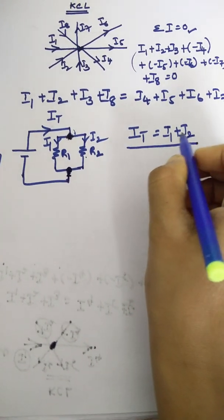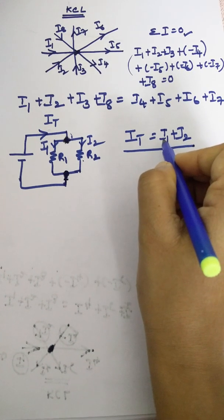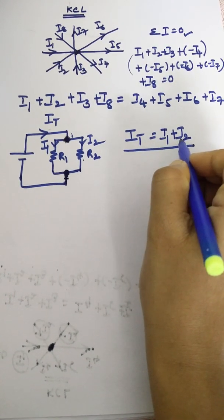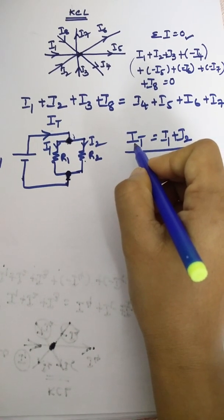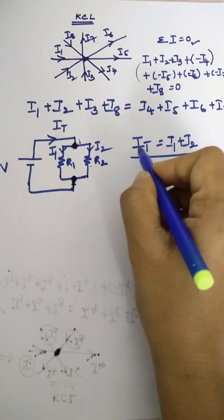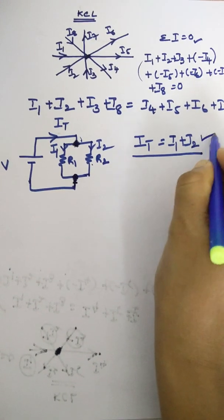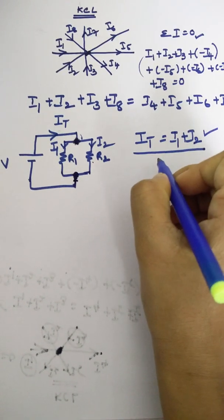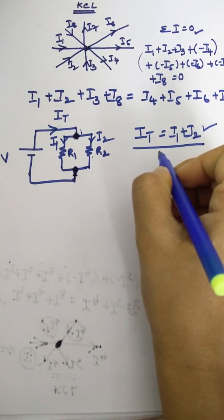In this way we can find any one of the missing terms. Either we may find I1, we may find I2, or we may find It. Any two elements will be known to you, so rest of the one will be calculated in this way.